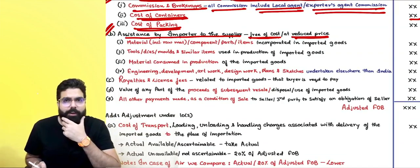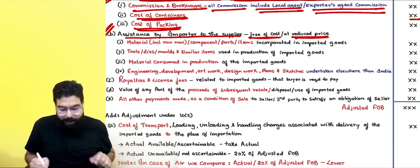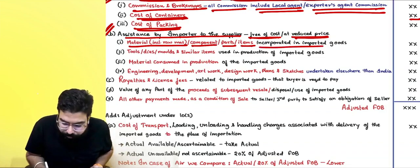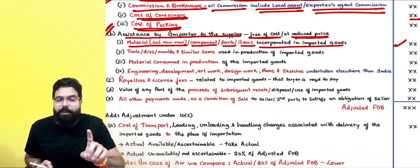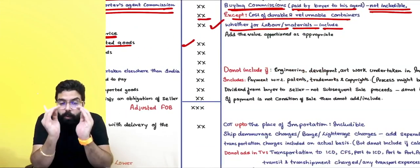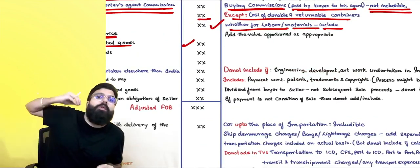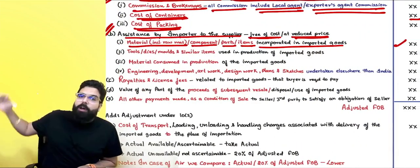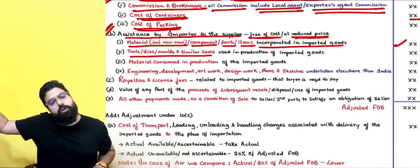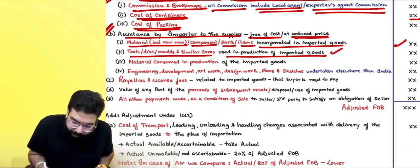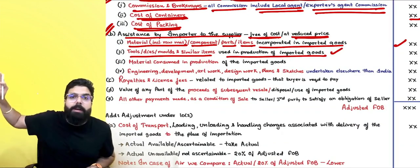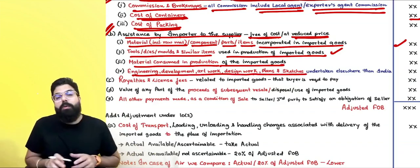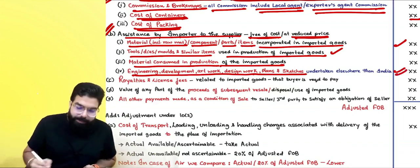Rule 10(1)(b): assistance by the importer to the supplier free of cost or at reduced cost must be included. This includes: raw materials, components, or parts incorporated in the imported goods; tools, dies, molds used by the exporter in production; consumable materials consumed in production — all apportioned and added. Also include engineering, design, development, or artwork undertaken outside India.